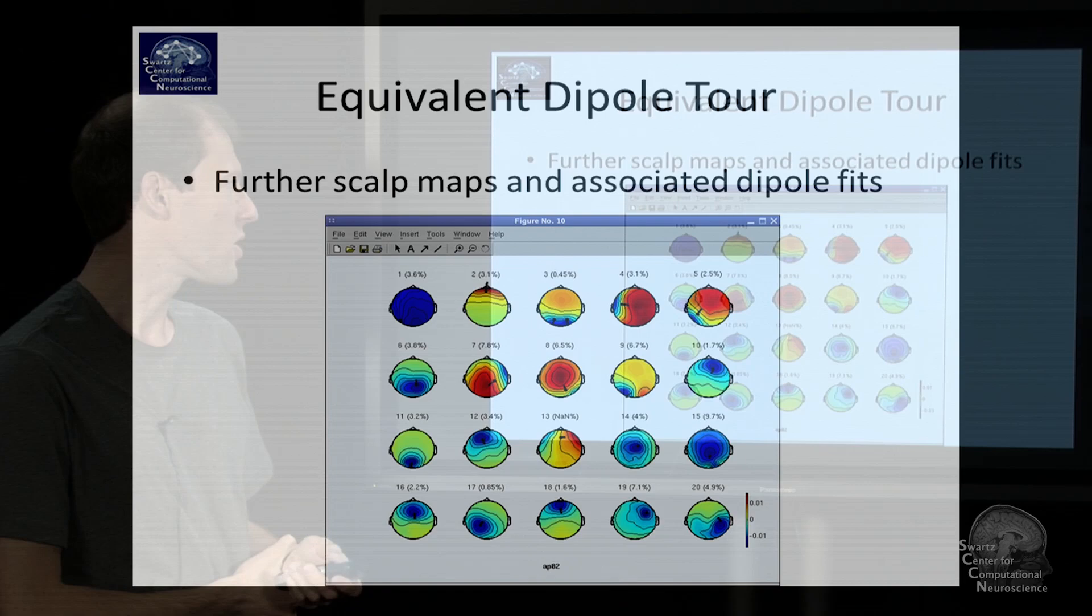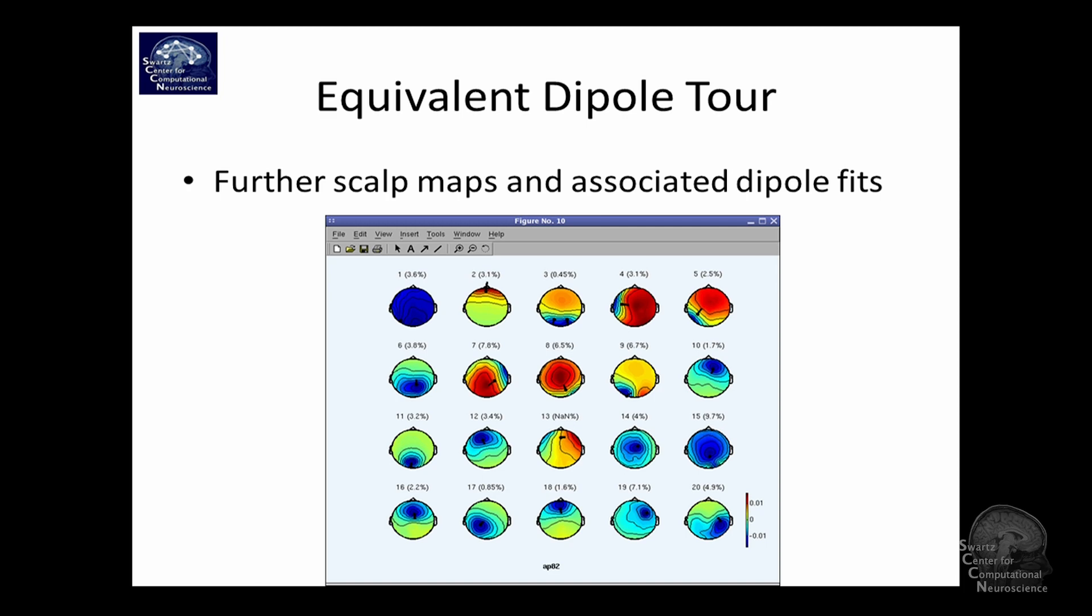But dipole fitting isn't perfect. So it has a few issues, and some of these are – before I get to that, I'll show you a few more maps here. It's good to build intuition with that. So it's really important, actually. For example, you might look closely at some of these dipole generators and where it maps on the brain.